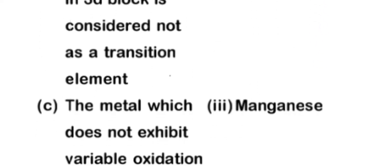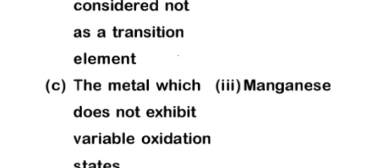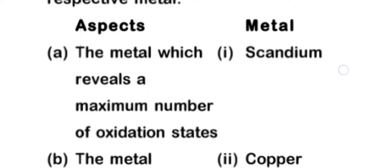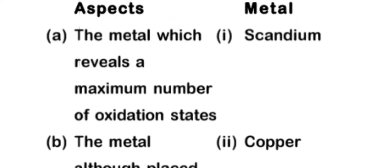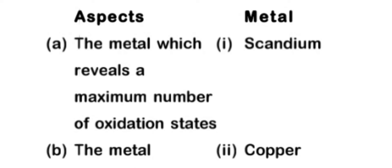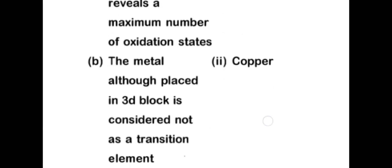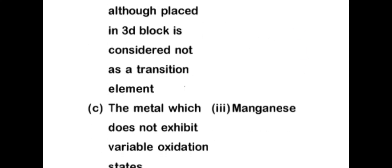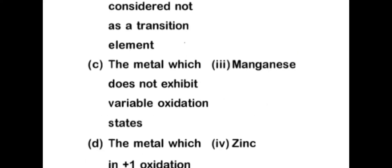Scandium has atomic number 21, copper 29. In scandium we have only one electron in d-orbital, while in copper we have 10 electrons in d-orbital. Manganese contains 5 electrons in d-orbital and zinc contains 10 electrons in d-orbital.